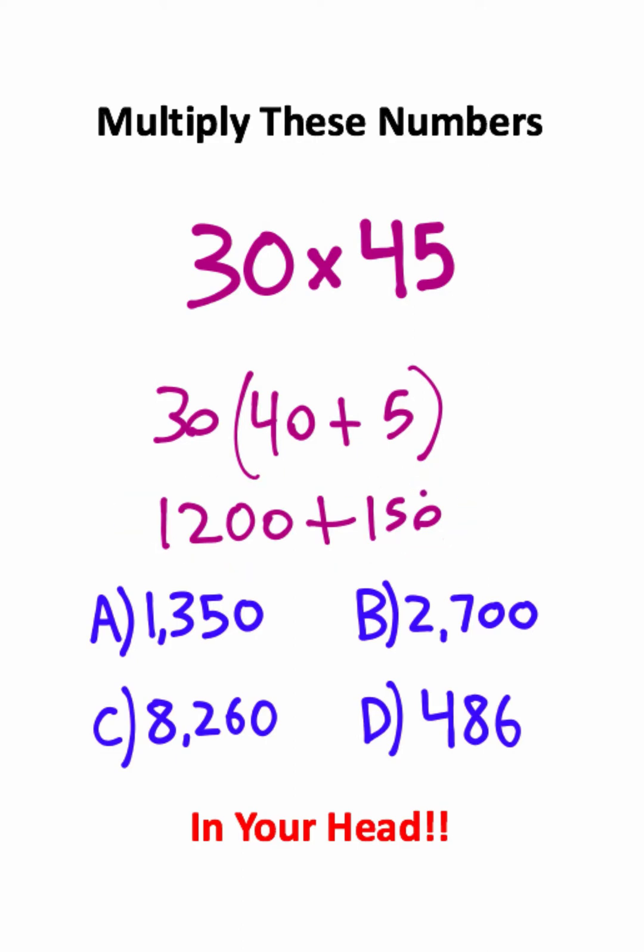Now, to add twelve hundred and one hundred fifty, we can actually split this into two more numbers. This can be one hundred plus fifty, so we have twelve hundred plus one hundred plus fifty, which is really simple to do in our heads.